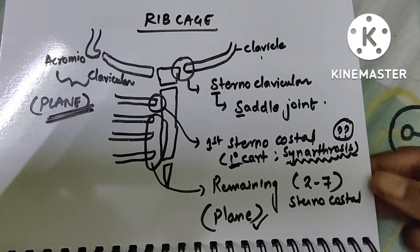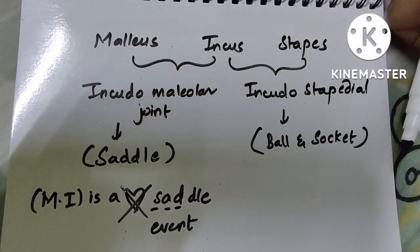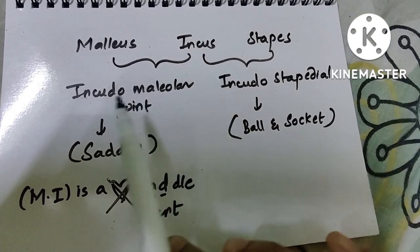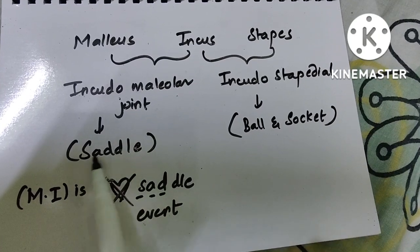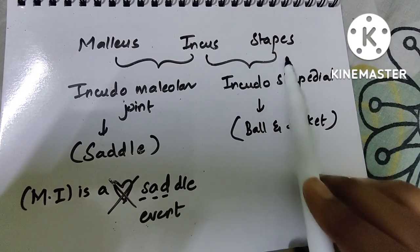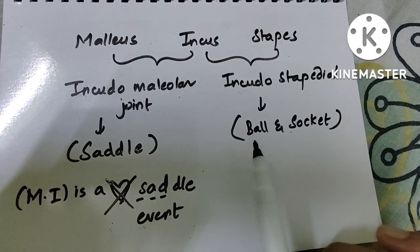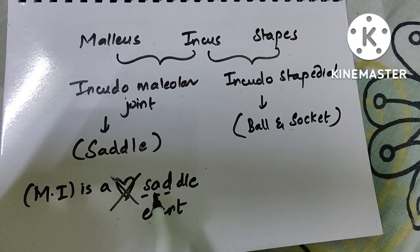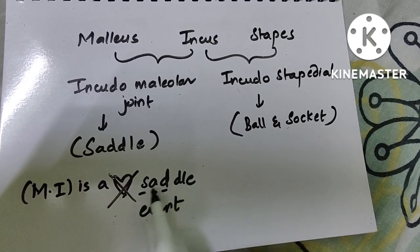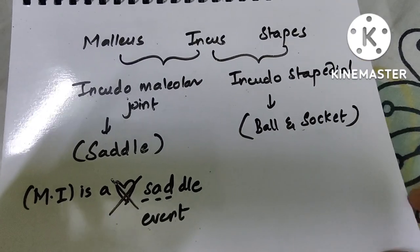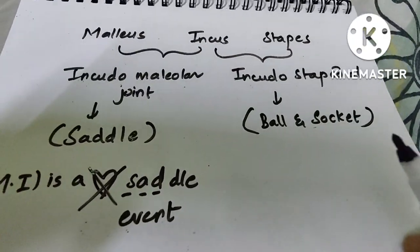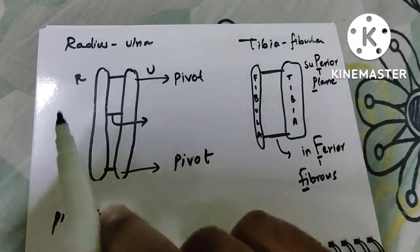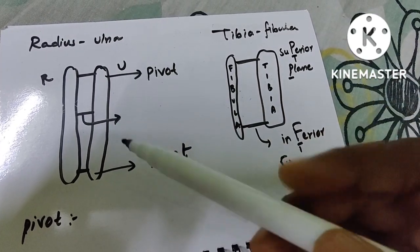The three ossicles in the ear: malleus, incus, and stapes. The incudomalleolar joint (malleus and incus) is a saddle joint — MI is a sad event, sad meaning saddle. The incudostapedial joint (incus and stapes) is a ball-and-socket joint.